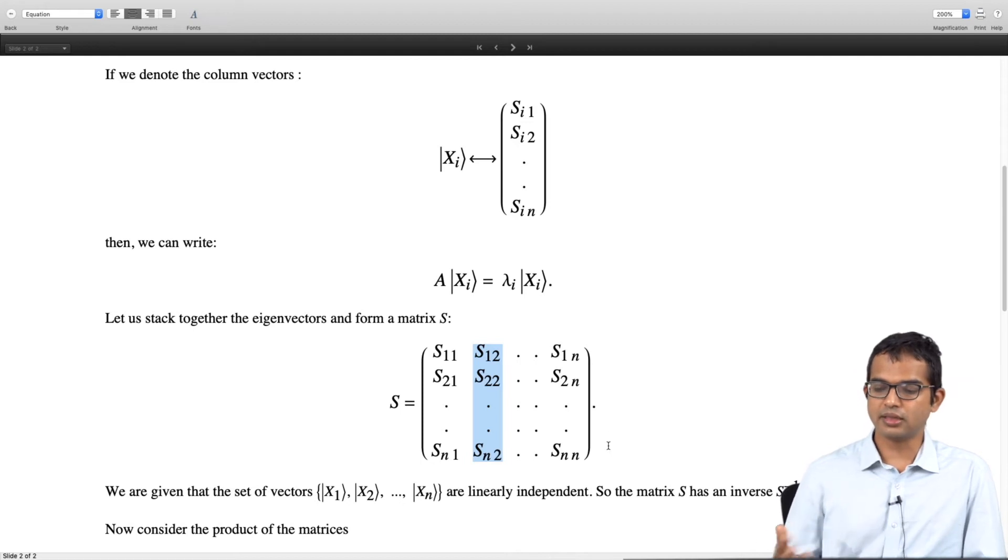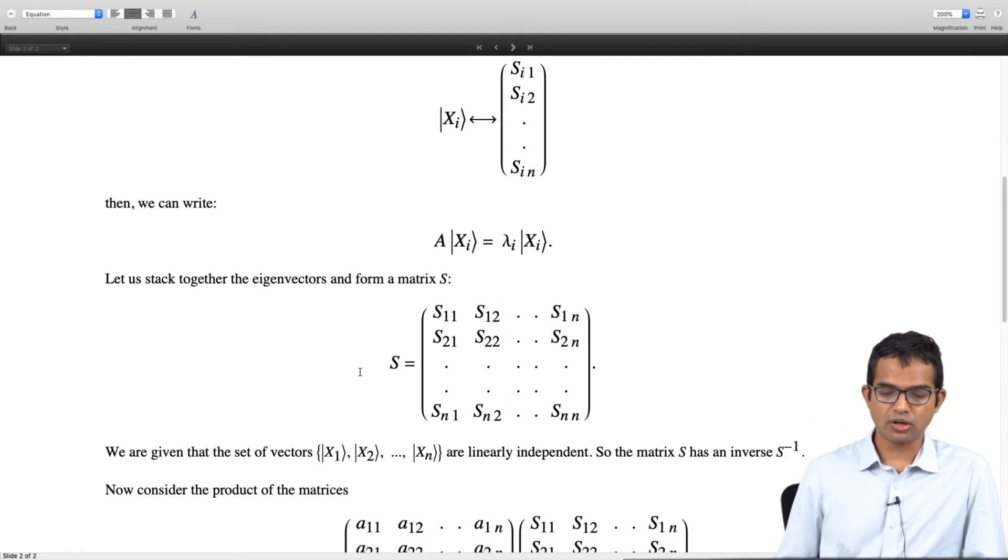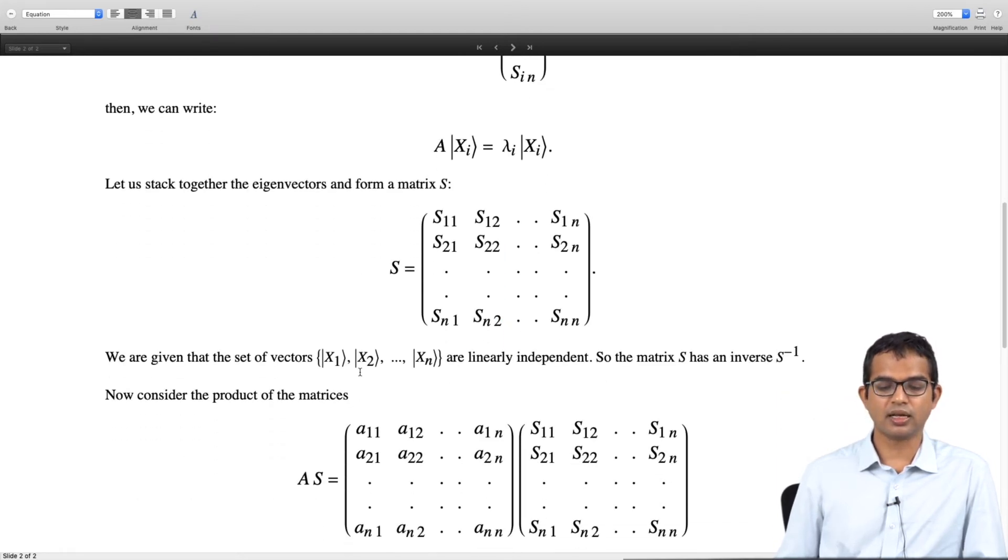So, let us consider its inverse and denote it as S inverse as usual. Now, the product of these matrices A times S is important. A times S is this matrix A that we started with and then we just stack together all its n linearly independent eigenvectors and form this matrix.